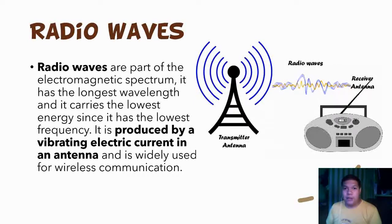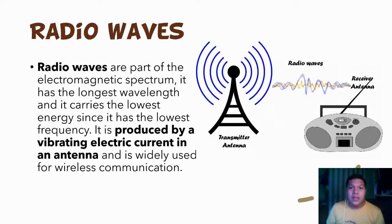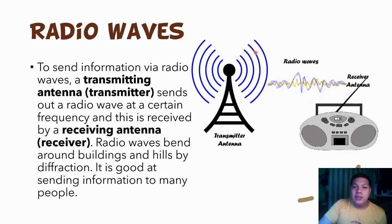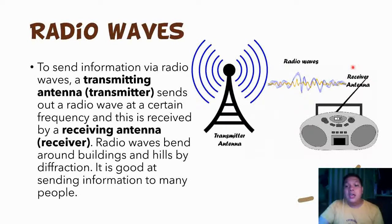The first type of electromagnetic wave we will discuss is radio waves. Radio waves are part of the electromagnetic spectrum and have the longest wavelength among all. They carry the lowest energy since they have the lowest frequency. Radio waves are produced by a vibrating electric current in an antenna and are widely used for wireless communication. To send information via radio waves, a transmitting antenna known as the transmitter sends out a radio wave at a certain frequency, received by a receiving antenna or receiver. Radio waves bend around buildings and hills by diffraction, and they are good at sending information to many people at very little cost.